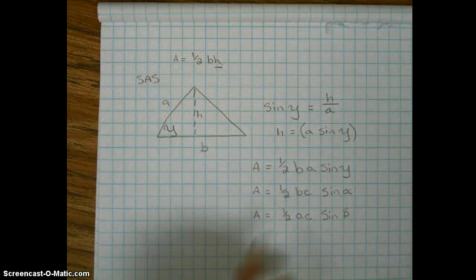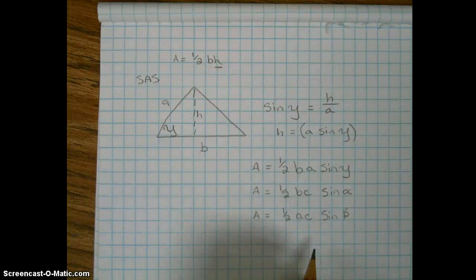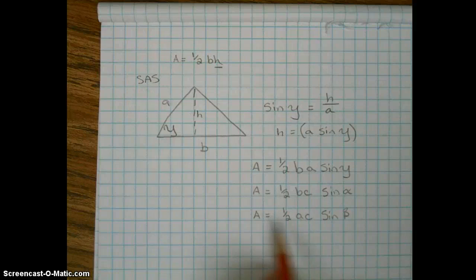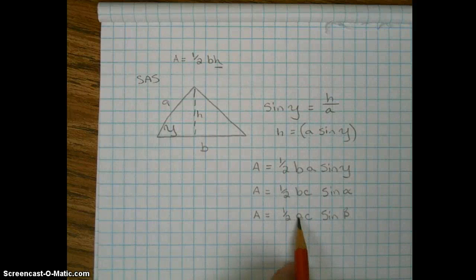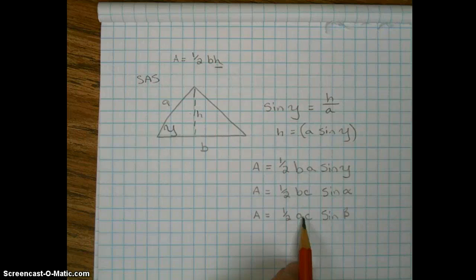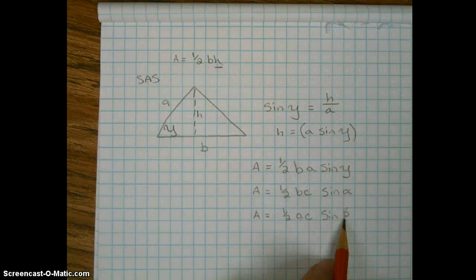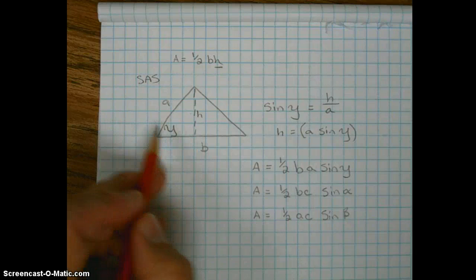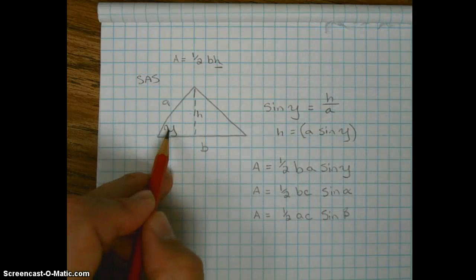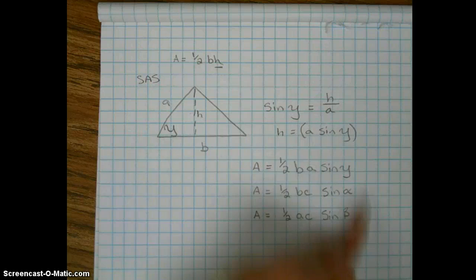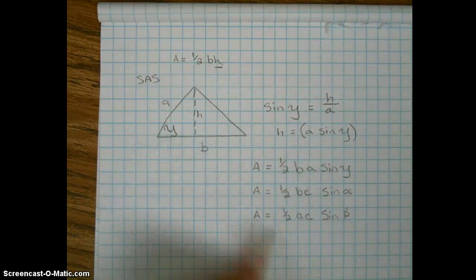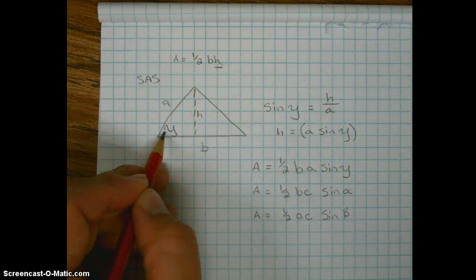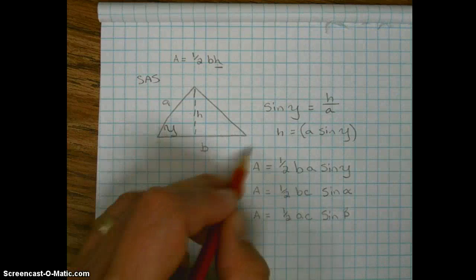So the theorem states basically the area of a triangle equals one-half the product of two of its sides times the sine of their included angle. Two of the sides, the included angle. You will use one of these three formulas if you're given two sides and the included angle and you're looking for the area of the triangle.